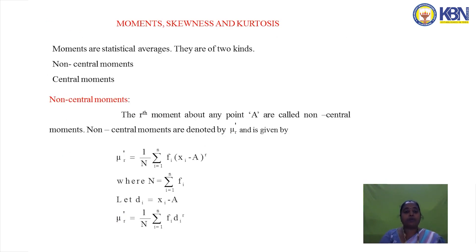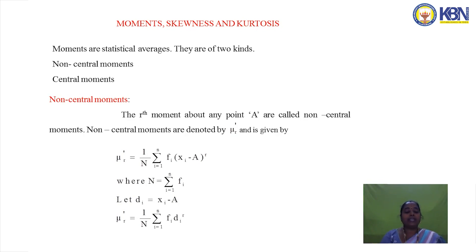The next concepts are moments, skewness, and kurtosis. Moments are statistical averages, and there are two types: non-central moments and central moments. The rth moment about any point A is called a non-central moment, denoted by μr′, given by μr′ = (1/N) Σfi(xi − A)^r.